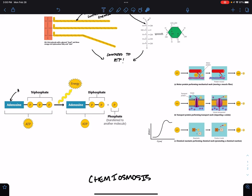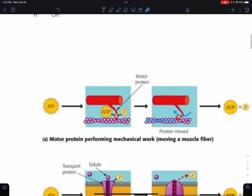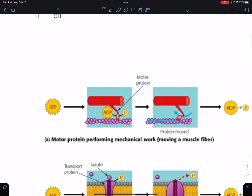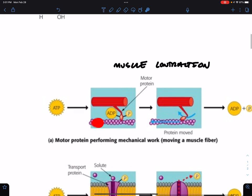For example, anytime you contract a muscle, like right now when you're picking up your pencil to write something down, muscle contraction is because ATP comes and binds to this myosin motor protein.